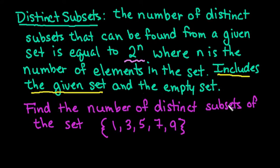For this example, if it asks you to find the number of distinct subsets of the set, you would count how many elements are in here. So I have 1, 2, 3, 4, 5.